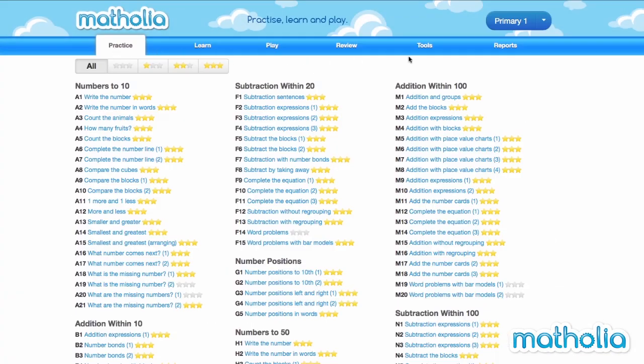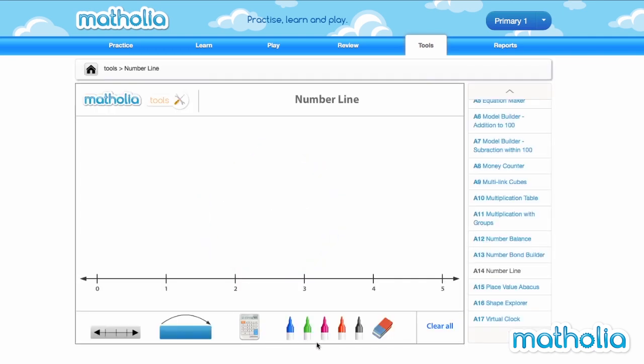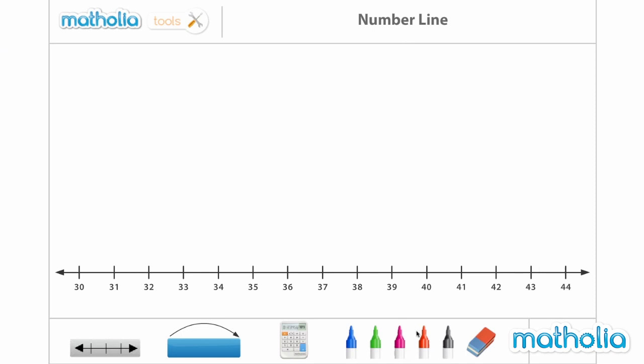The Matholia interactive number line is a versatile tool for visualizing number patterns and operations on whole numbers. Like many of Matholia's tools, basic pen options allow you to draw on the screen, which is useful for smart boards and tablet computers.